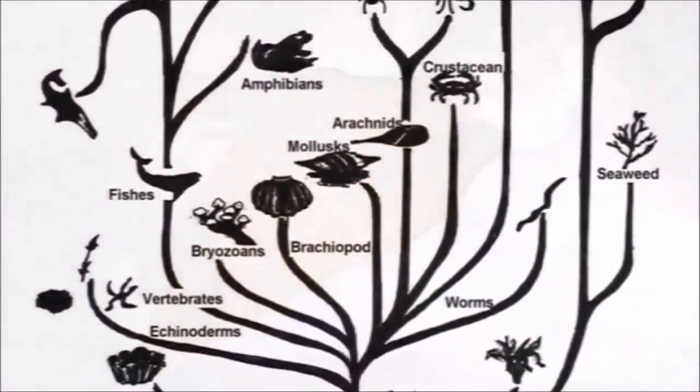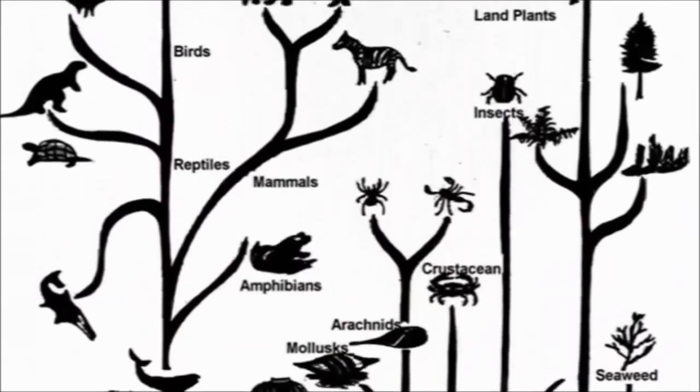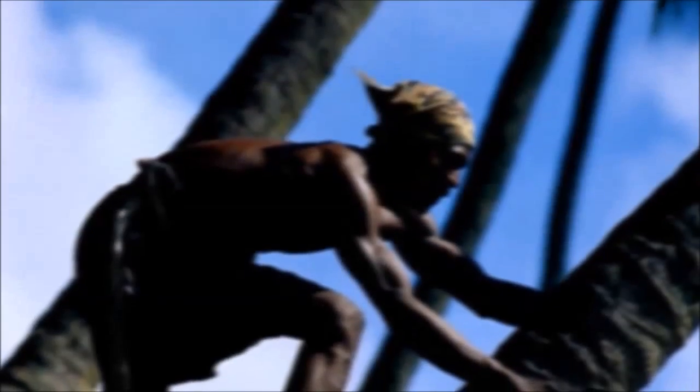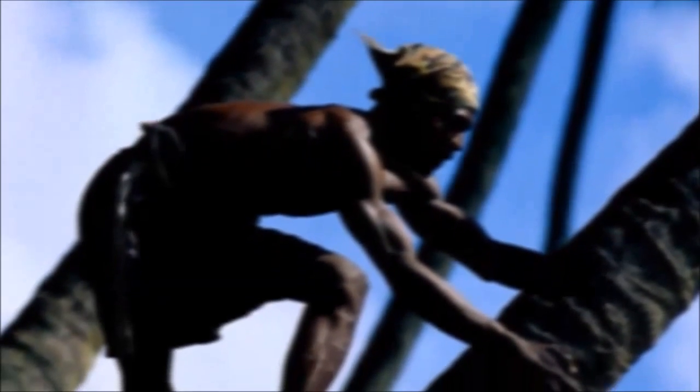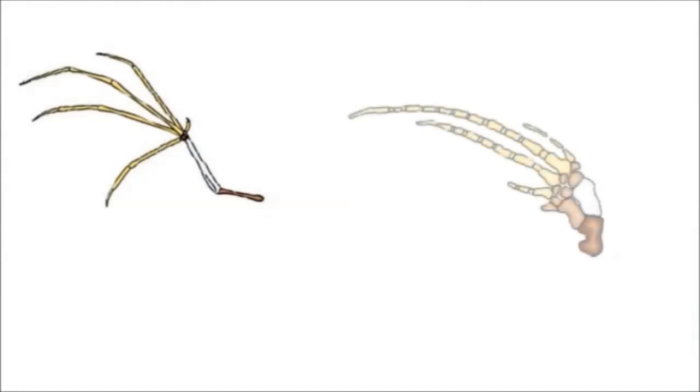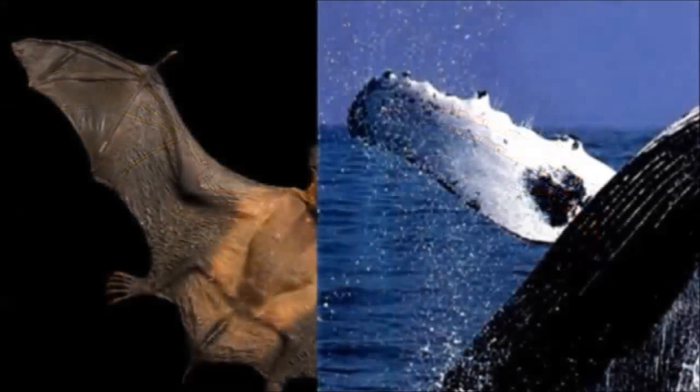In their defense, theists often claim God created life according to a plan. Therefore, it is not surprising we observe similarities in anatomical structures between different species. Although this might explain the similarities between the forearms of primates and humans, surely the best way to design the infrastructure of a bat's wing is not also the best way to build a whale's flipper. Such anatomical particularities make no sense if the structures are uniquely engineered and unrelated.